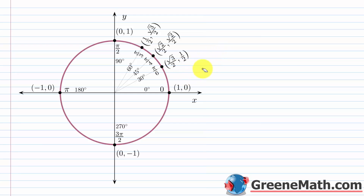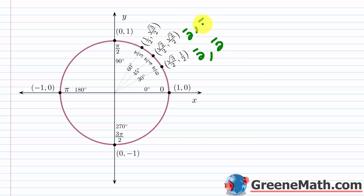Once we have quadrant one set up, there are tricks to remember these three values. I'll show what I learned a long time ago — many videos use this method too. What you want to do is set up a denominator of 2 in each case. So everywhere you'll have a denominator of 2 — that's very easy to remember.